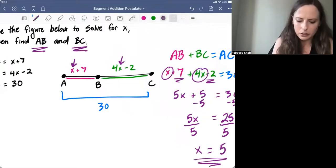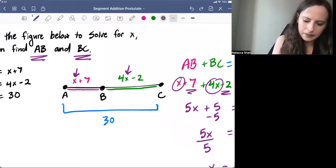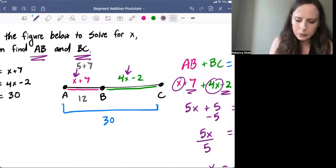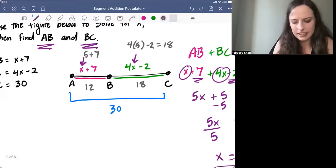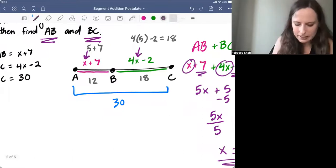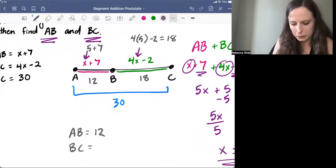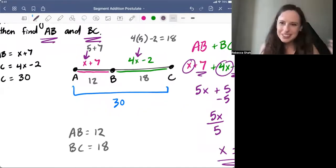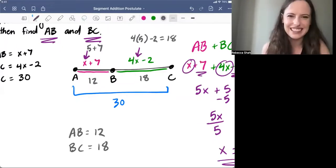So for AB, we have five plus seven, which equals 12. And for BC, we have four times five minus two, and that equals 18. So the measure of BC is 18. Now remember, when we're writing our answer, we want to write AB equals 12 without that bar. And same thing for BC without the bar. And as a quick check, we can also say 12 plus 18, well, that should add up to 30, and we can see that it does.